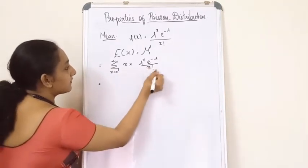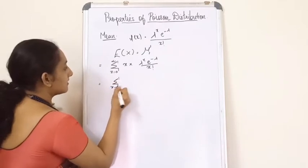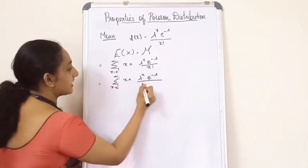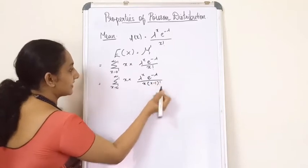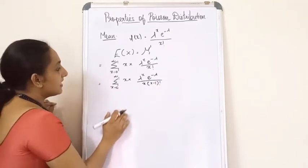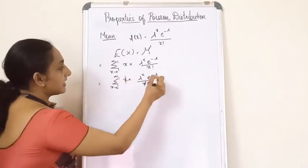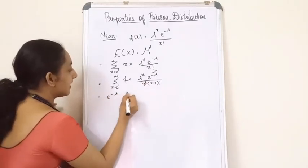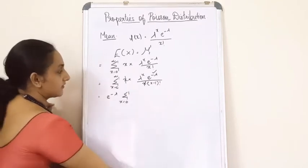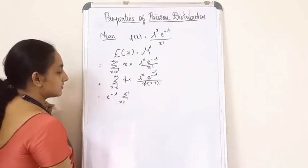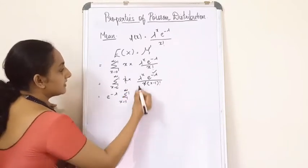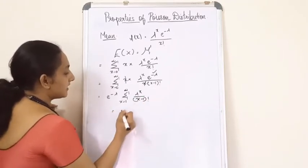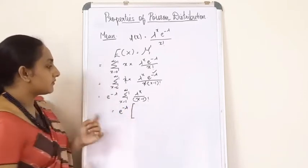Now I am going to rewrite x! as x · (x−1)!. This allows me to cancel the x terms. Taking the constant e^(−λ) outside, I get e^(−λ) · Σ (x=1 to ∞) λ^x / (x−1)!.